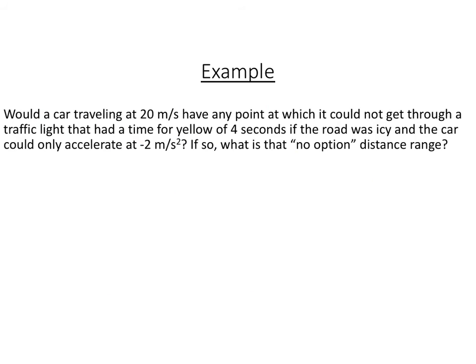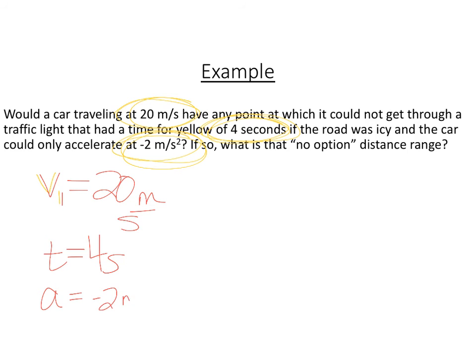Here we're trying to look at if a car traveling at 20 meters per second, so that's going to be some sort of velocity, could not get through a traffic light that have a time of, for yellow, 4 seconds. So we have 4 seconds to get through this traffic light. The road's icy, and so the car can only accelerate at negative 2 meters per second squared. So basically, how far away can we be from the yellow light and be able to make it to a stop safely? It looks like we have a V initial. That's 20 meters per second. And then it looks like we have a time that is 4 seconds. Acceleration, that is negative 2 meters per second squared. And then we're looking for the distance.